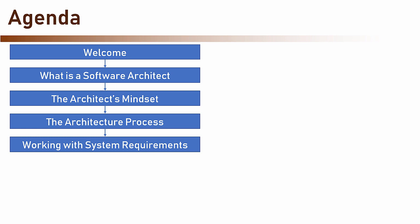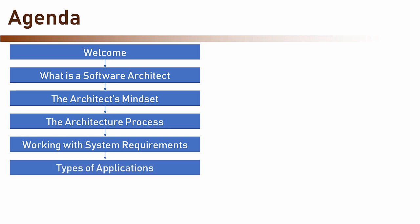After we have discussed the requirements, we will turn our attention to the application itself. The first thing an architect should do is define the type of the application. In this section, we will explore the various types of mainstream application types and what are the main attributes of each type.